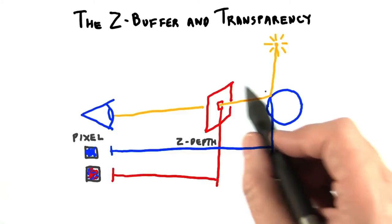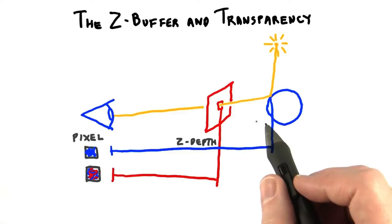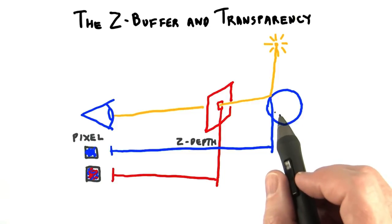The over operator shows how we can get a transparent effect by blending two objects. However, there's one little catch.